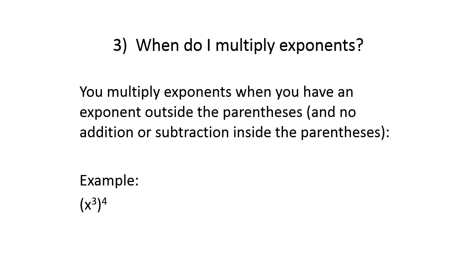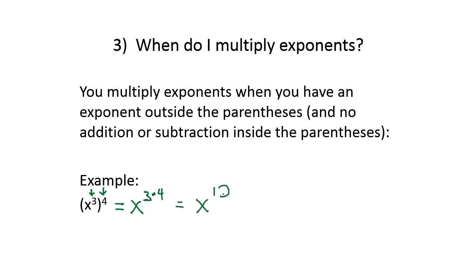We multiply exponents when we have an exponent inside the parentheses and an exponent outside the parentheses, and if there's no addition or subtraction inside the parentheses. So x to the third raised to the fourth power gives us x to the three times four. Three times four gives us x to the twelfth. An exponent outside the parentheses means we multiply it by the exponent inside.